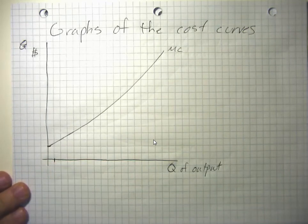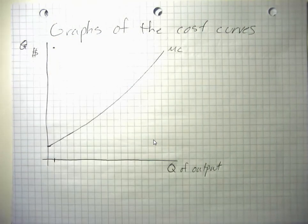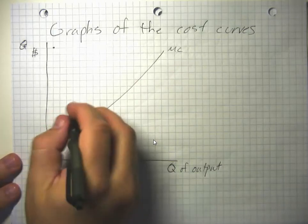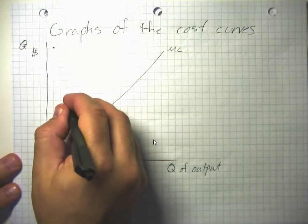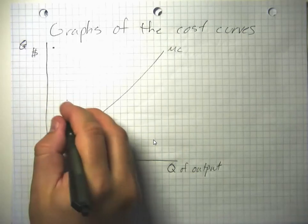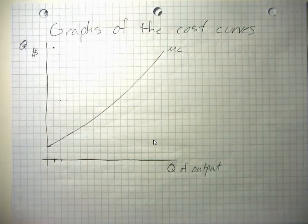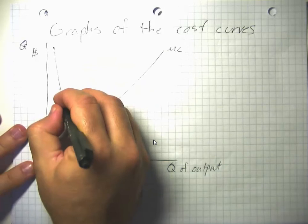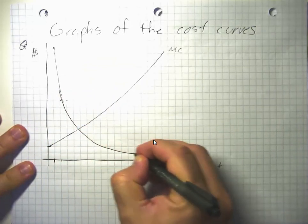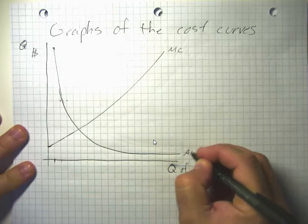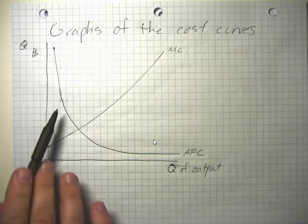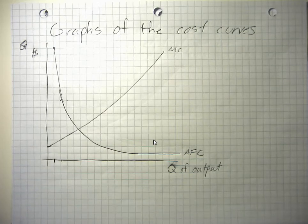At low levels of output, our average fixed cost is really high because we're only dividing our fixed cost among one unit of output. When we go to two units, average fixed cost per unit falls pretty dramatically because we're dividing fixed cost between two units. So average fixed cost per unit takes on this hyperbola shape — at first it falls very rapidly, then later it falls more slowly.